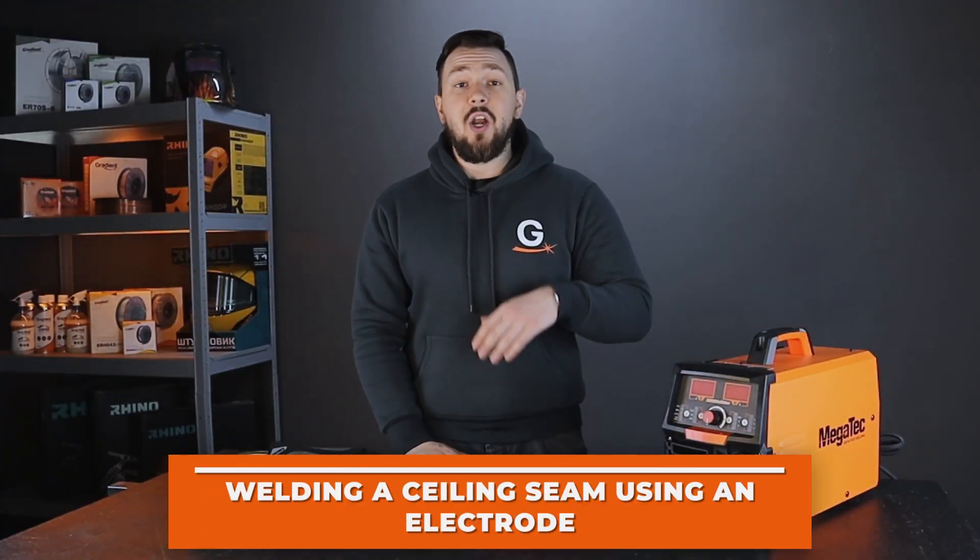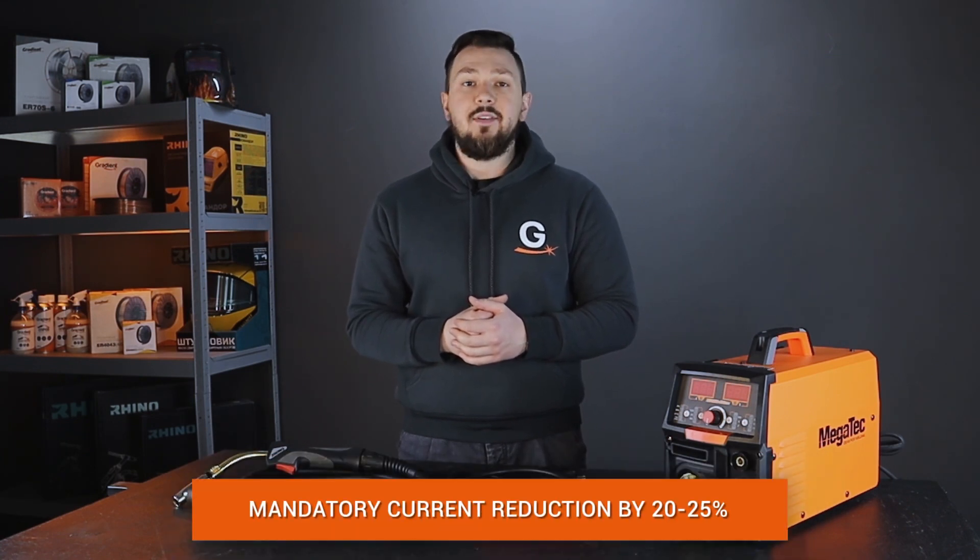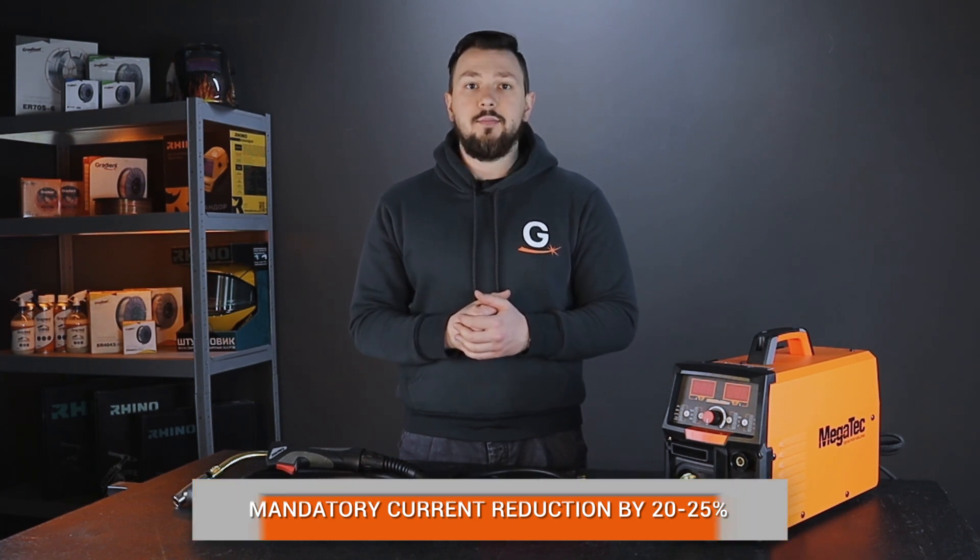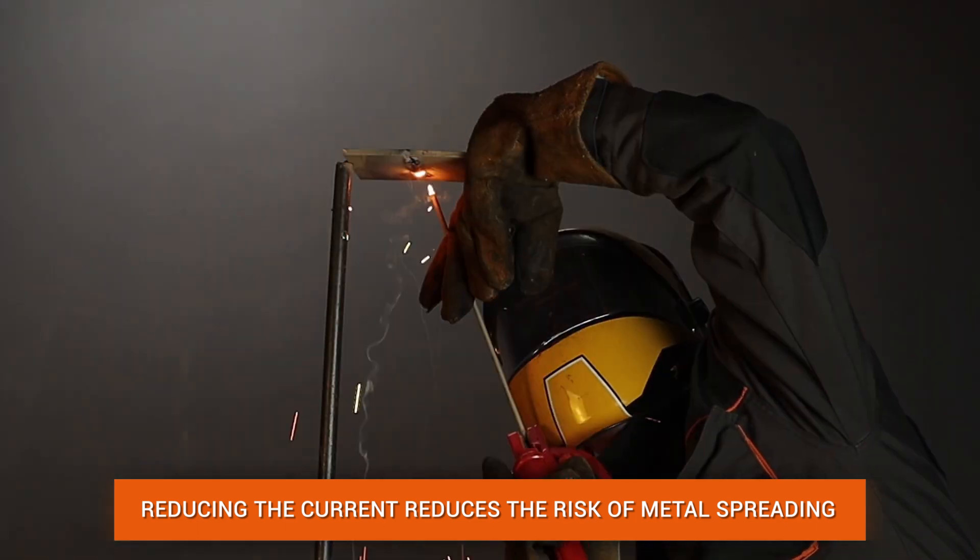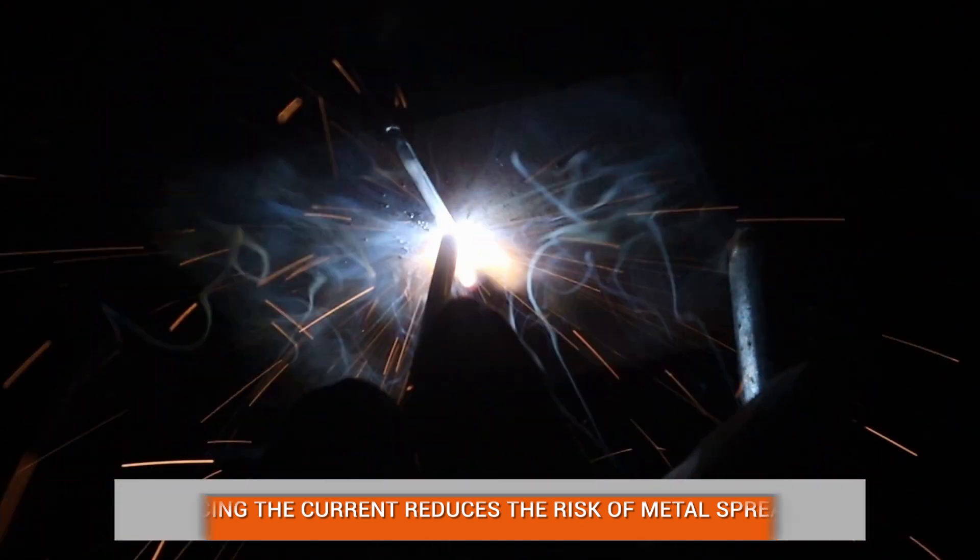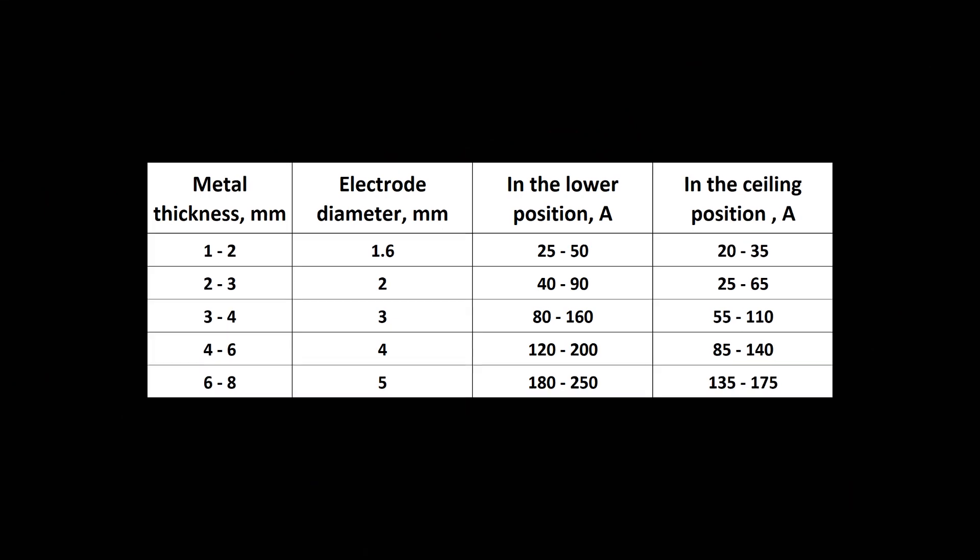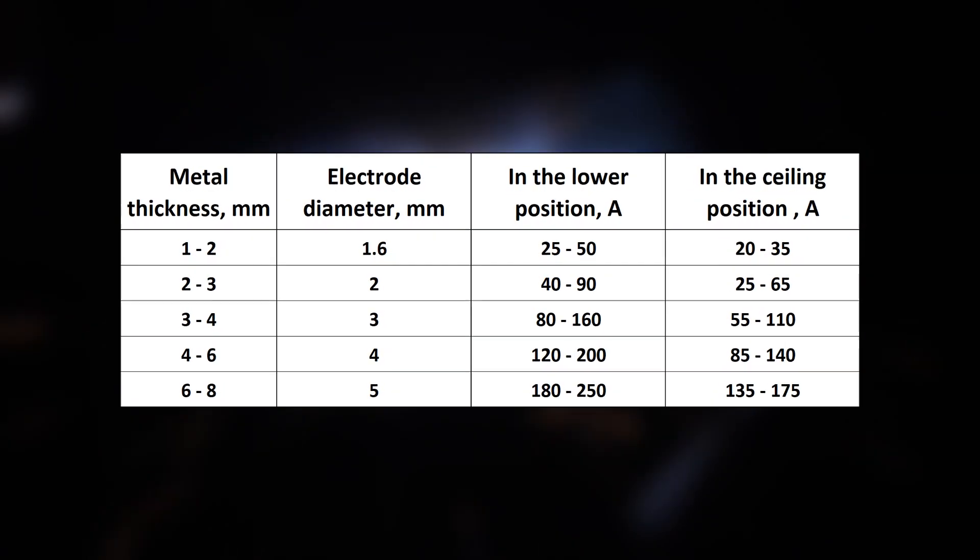Let's start with welding with the inverter. For welding in the ceiling position, the current must be reduced by 20-25% of the set current as for welding in the lower position. This is to prevent the metal from spreading during welding, but in general, the settings will depend on the welder's skills. For novice welders, we have prepared a table that can be used to set the current strength when welding a ceiling seam.